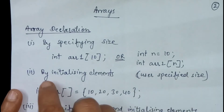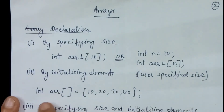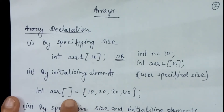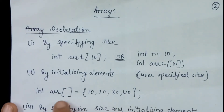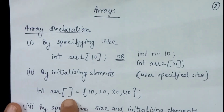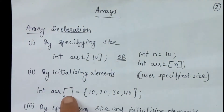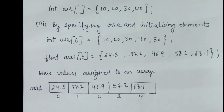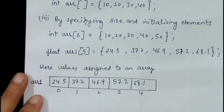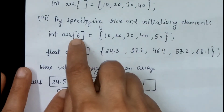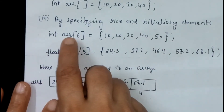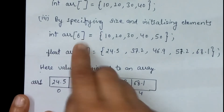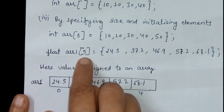In the second way, we can declare the array by initializing the elements. In this case, we are not mentioning the size of the array — we just initialize it by putting the values in curly brackets: 10, 20, 30 and 40. These are four values, so it will automatically take the dimension of the array as 4. The third case is initializing and also specifying the size. We mention the size as well as initialize by giving values in curly brackets. For example, one is an integer array of dimension 6, and array1 is a floating type array of dimension 5.